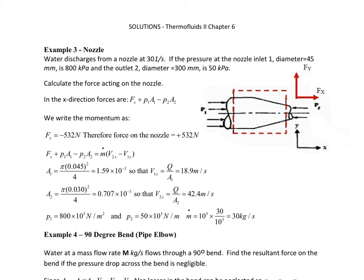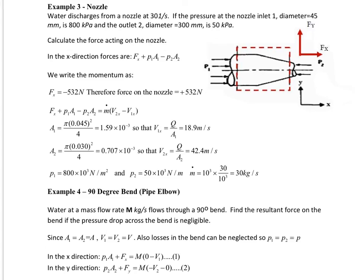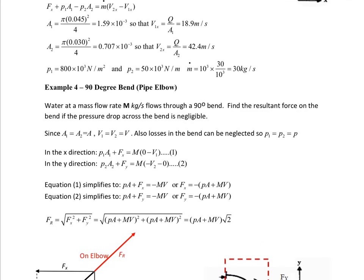The figures are given here. And finally, the last example, if we look at an elbow, very similar, the only difference between example 3 and 4 is that the elbow has a constant diameter. So if you look, it goes through 90 degrees but there's a constant diameter.